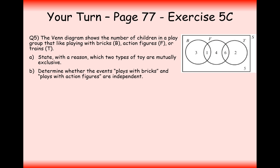Now try Question 5 from Exercise 5C — pause the video and have a go. The Venn diagram shows the number of children in a playgroup that like playing with bricks, action figures, or trains. Part A: state with a reason which two types of toys are mutually exclusive. We know that mutually exclusive events have a probability of intersection equal to zero — their Venn diagram circles don't overlap. Looking at the diagram, bricks and trains don't overlap, so bricks and trains are the mutually exclusive events.